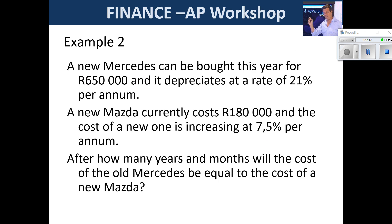A new Mercedes can be bought this year for R650,000 and it depreciates at 21% per annum. A new Mazda currently costs R180,000 and the cost of a new one is increasing at 7.5% per annum. After how many years and months will the cost of the old Mercedes equal the cost of the new Mazda? The one is depreciating and the other is increasing in price from a lower base, and at some point we solve where they're equal.